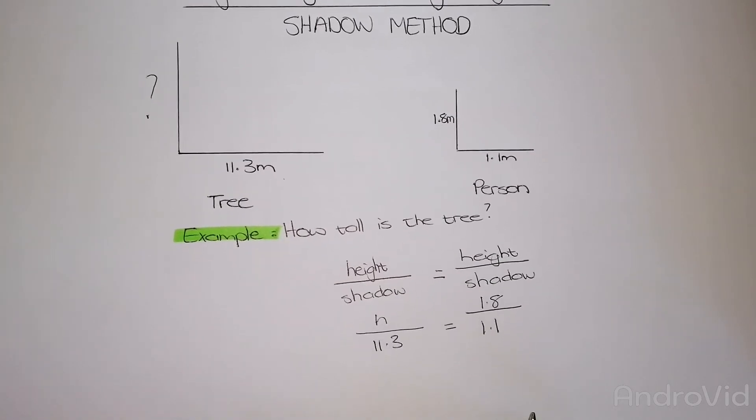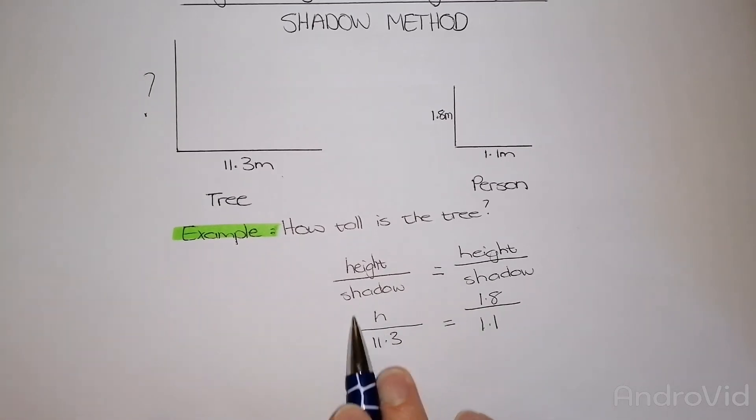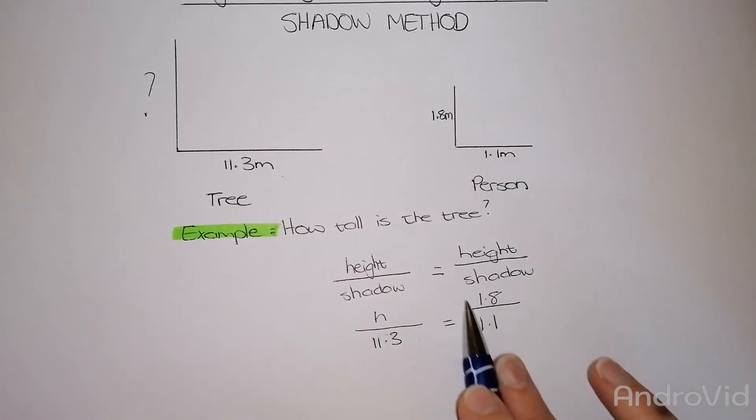What I need to do now is find the value of h, so I need to get rid of this fraction. It's dividing at this stage, so I need to multiply it by 11.3 to get rid of that over here and multiply the same on the other side. So my h is going to be equal to 1.8 multiplied by 11.3 divided by 1.1.